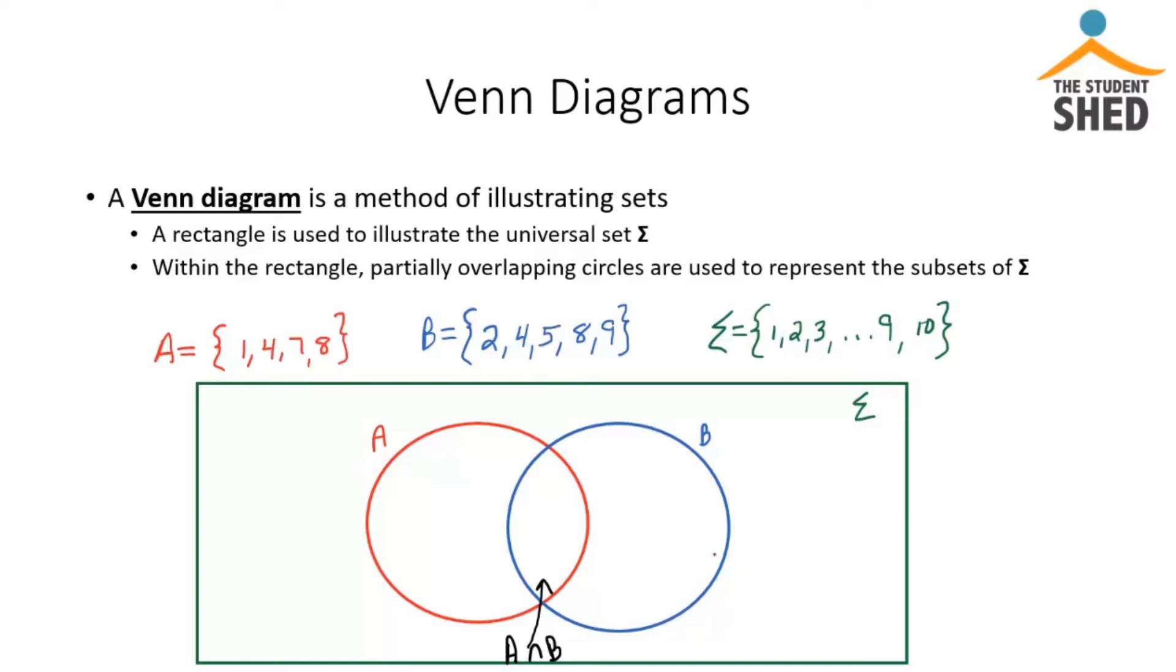So we have a blue circle representing set B, a red circle representing set A, and a partially overlap. And this overlapping space is going to be what they have in common.